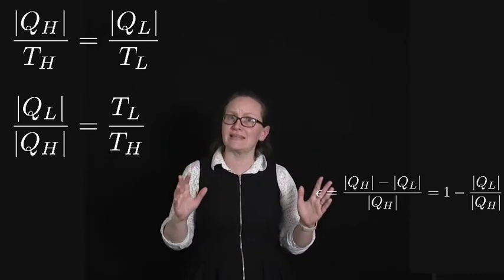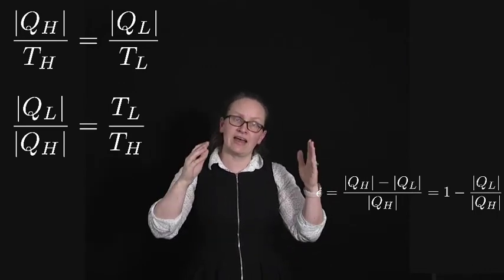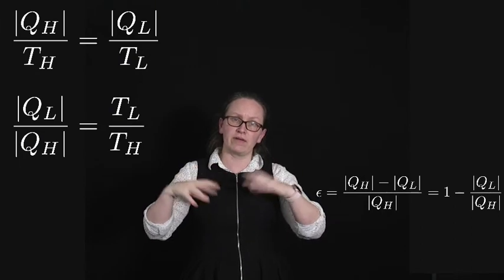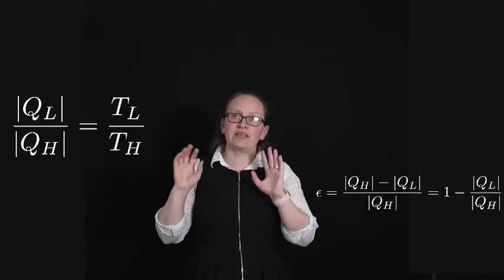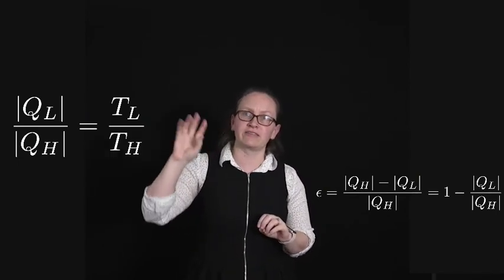Now that thing is always going to be less than 1, because TL, the temperature of the colder bath, the colder reservoir, is always colder than the temperature of the hot reservoir.